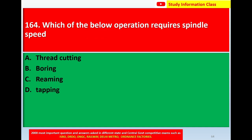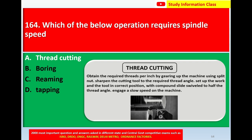Next, question number 164: Which of the below operations requires spindle speed? Option A thread cutting, option B boring, option C reaming, option D tapping. Correct answer is thread cutting. Thread cutting involves applying the required threads per inch by gating the machine using a split nut, sharpening the cutting tool to the required thread angle, setting up the work and tool in the correct position with the compound slide, and engaging a slow speed on the machine. Correct answer is option A, thread cutting.